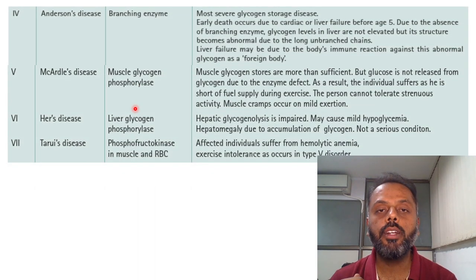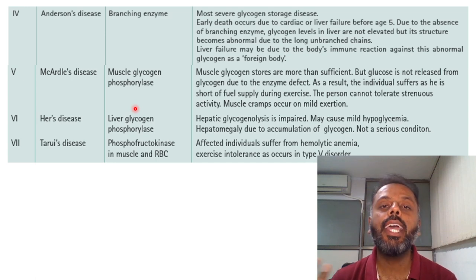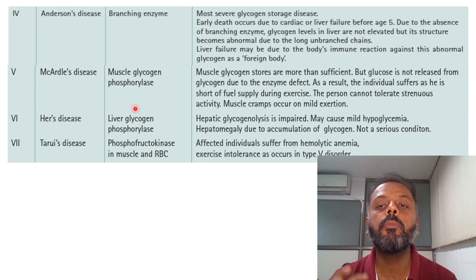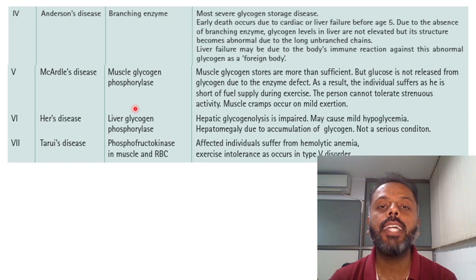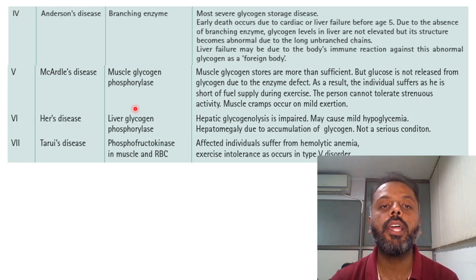Type 4 is Anderson's disease, occurring due to deficiency of the branching enzyme. Abnormal glycogen with long unbranching chains accumulates in the liver. This is a very severe disease — early death occurs due to cardiac or liver failure before age 5. To remember Types 3 and 4, use the mnemonic ABCD: A for Anderson's disease, B for branching enzyme, C for Cori's disease, D for debranching enzyme.